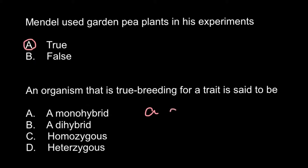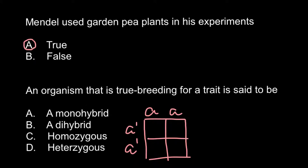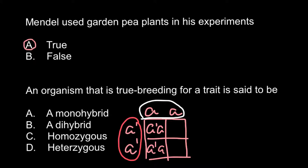We don't know whether the red color would be dominant over the white, so we also use small letters but with a prime — 'a prime a prime'. When we cross these two parents, one with white flowers and one with red flowers, not knowing which is dominant, all the progeny will be heterozygous: one allele would be 'a prime' and the other just 'a'.